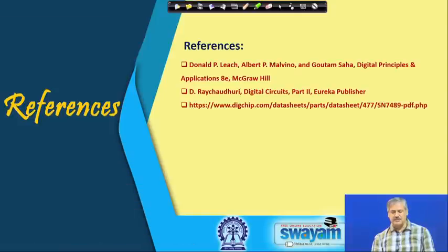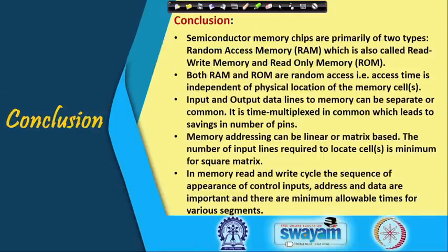With this we conclude the introduction to memory. To summarize: semiconductor memory chips are primarily of two types — RAM and ROM — both are random access, where access time is independent of the physical location of memory cells. Input/output data lines can be separate or common. Memory addressing can be linear or matrix-based; for matrix-based addressing, the number of input lines to locate a cell is minimum for a square matrix. In memory read and write cycles, the sequence of appearance of control inputs, address, and data are important, with minimum allowable times for various segments — giving an estimate of how quickly we can read or write into memory. Thank you.